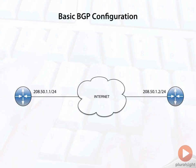Looking at the basic configuration of BGP, I've taken two routers here. I've given you some IP addresses. I know they're on the same subnet here, but it really doesn't make a difference — just imagine that the internet is in between.